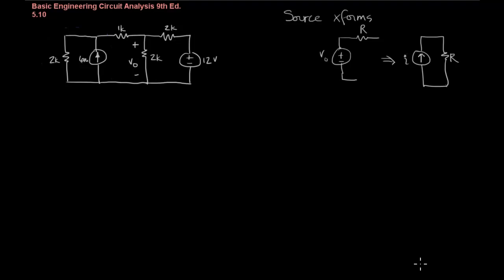In this example, we're going to use superposition to solve for the voltage across this branch of our circuit. And we're going to accomplish this by also using source transformations to simplify the circuit so that we don't have to perform nodal and mesh analysis.